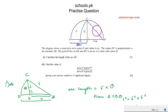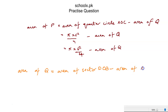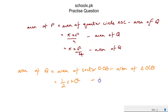Area of region Q equals the area of sector DCB subtracted from the area of triangle OCB. The area of a sector is always half R squared θ, and the triangle area is base times height.